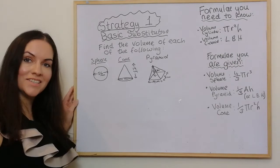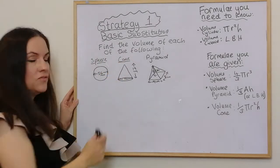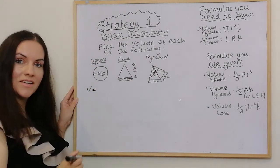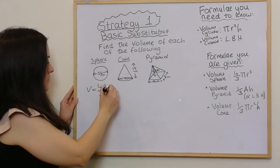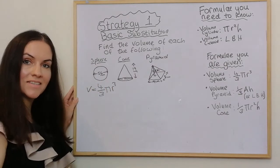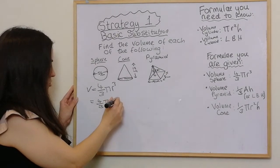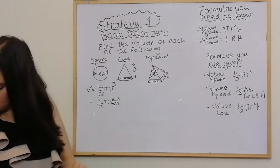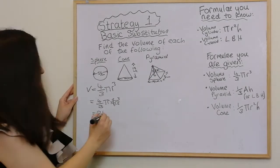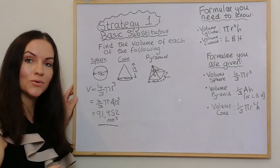So looking at these questions — this is strategy one, just substitution. We're asked to find the volume of each of the following. We've got a sphere, so the volume of a sphere is 4/3 πr³. The radius here is 28, so it would be 4/3 π times 28 cubed. The answer to this one is 91,952 millimetres cubed — we've just substituted the value in.